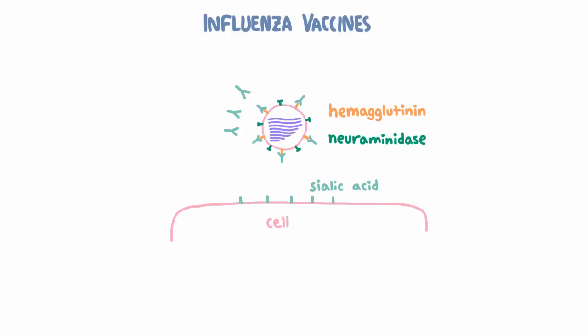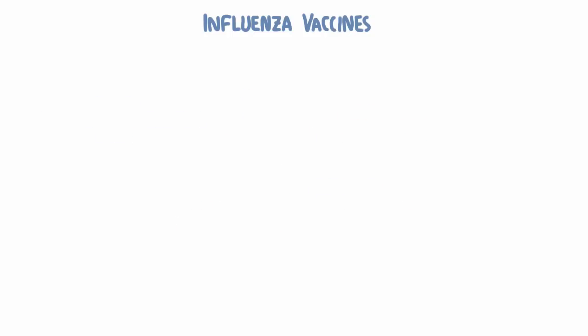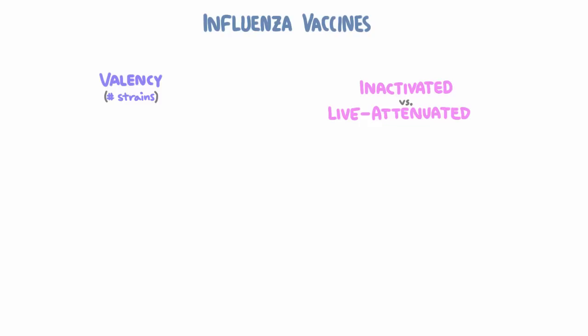We can actually measure the serum antibody responses to the influenza vaccine using a serum hemagglutinin inhibition assay. Now let's talk about the actual vaccines. They can be categorized based on their valency, which refers to the number of influenza A and B strains included, and whether they are inactivated or live attenuated. Note that the types and composition of influenza vaccines are constantly changing, so check the CDC website for up-to-date information.